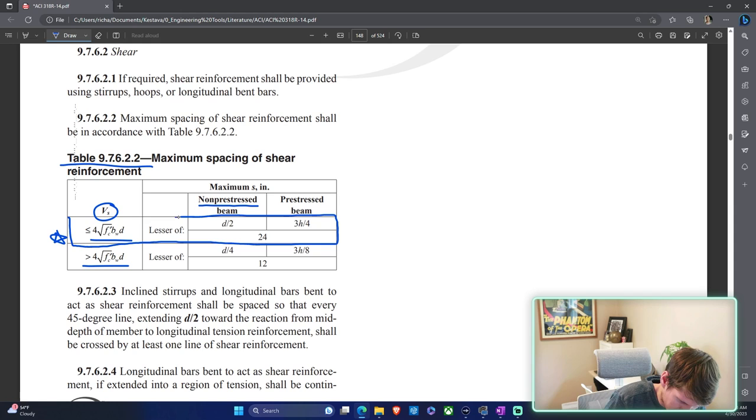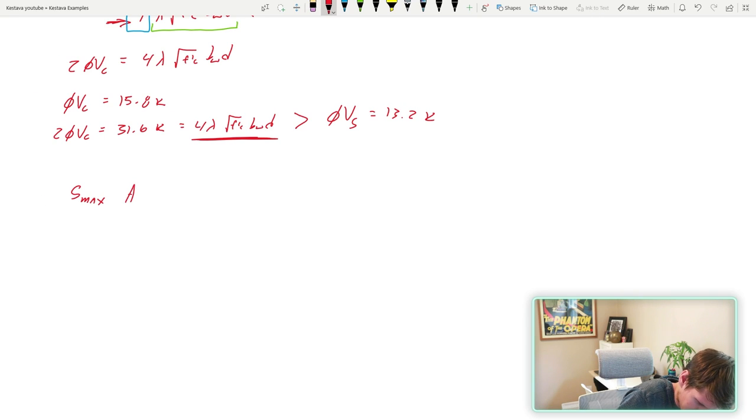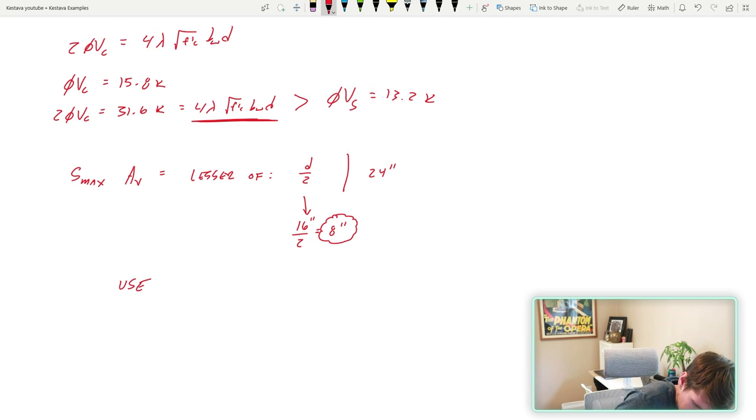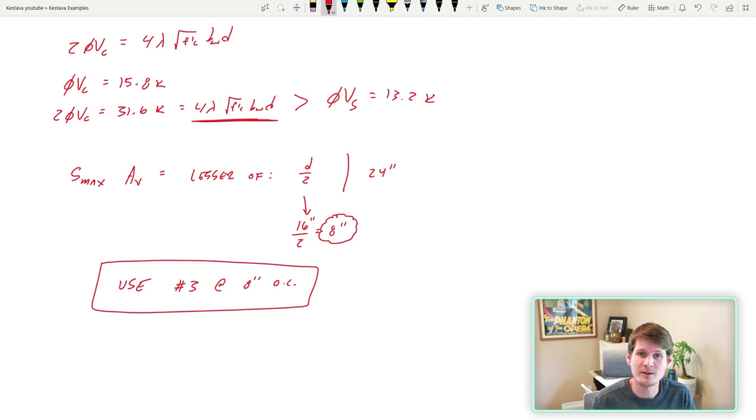We fall under this one, come right into here. We are the lesser of D over two and 24 inches. Let's go use that. S max of AV equals D over two is 16 inches over two, which equals eight inches. It's the lesser of eight and 24. That means the maximum spacing of our shear reinforcement needs to be eight inches. We specified 12 inches in our first go around. So our final answer is going to be use number threes at eight inches on center for your shear reinforcement in your concrete beam for this example.